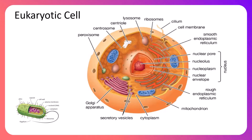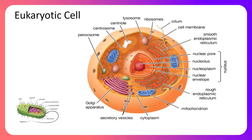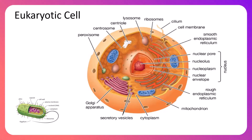With the eukaryotic cell, we see a nucleus surrounding the DNA for the first time. Eukaryotic cells evolved more recently than prokaryotes. Starting from the most centralized structure, the nucleus has its own nuclear envelope — a double membrane with pores that allow certain things to pass through. Inside the nucleus is a dense core called the nucleolus, where condensed DNA is kept.